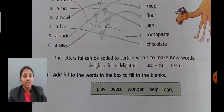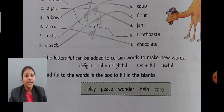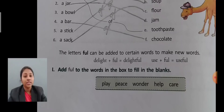Below that, we have studied making new words by adding '-full.' The letters F-U-L-L can be added to certain words to make meaningful new words. For example, delight plus full equals 'delightful,' and use plus full equals 'useful.' Exercise I asks you to add 'full' to words given in a box to fill in the blanks.